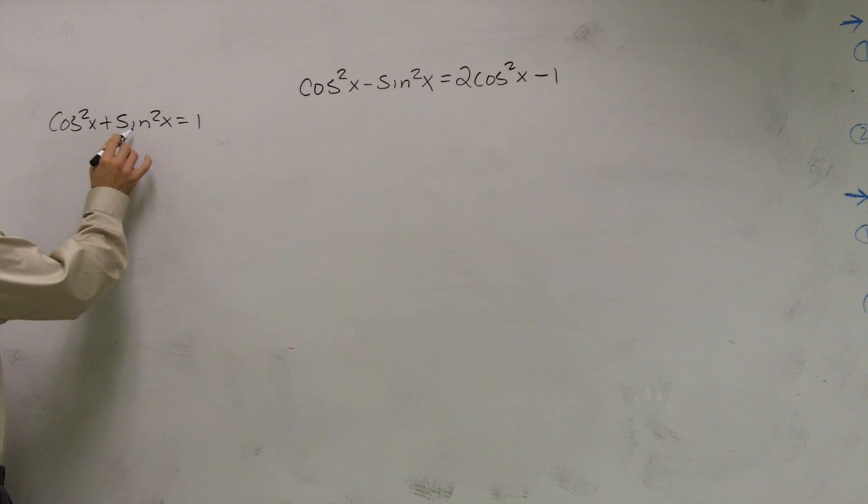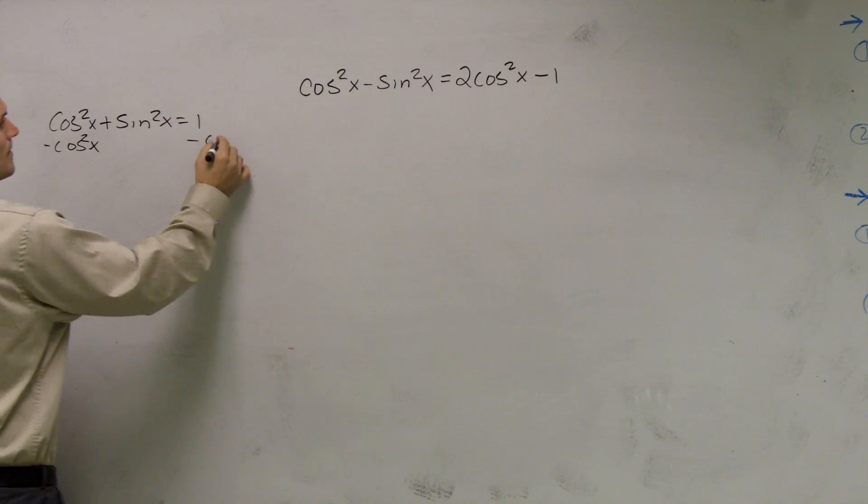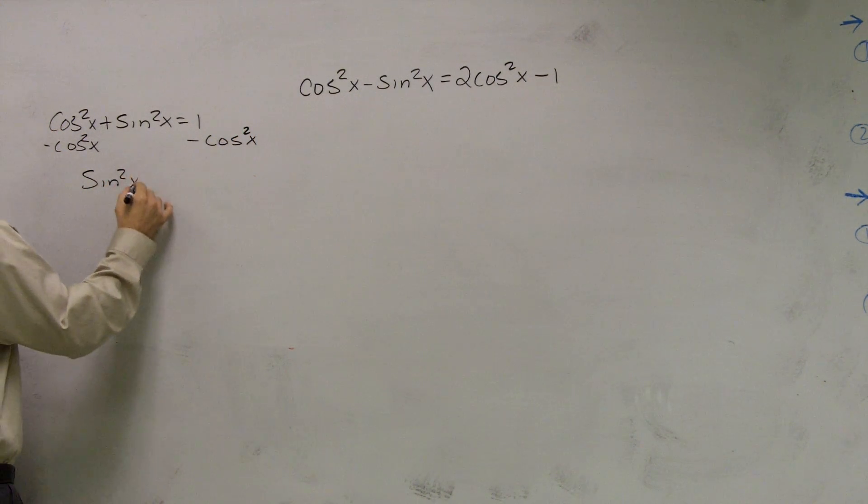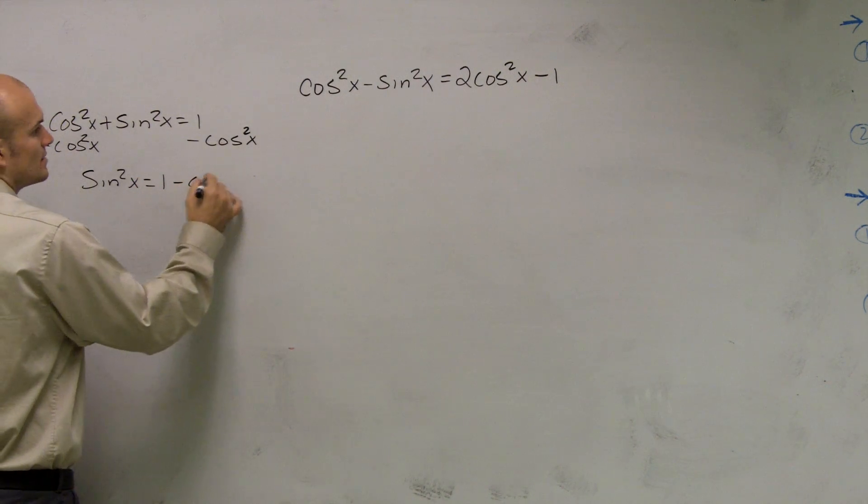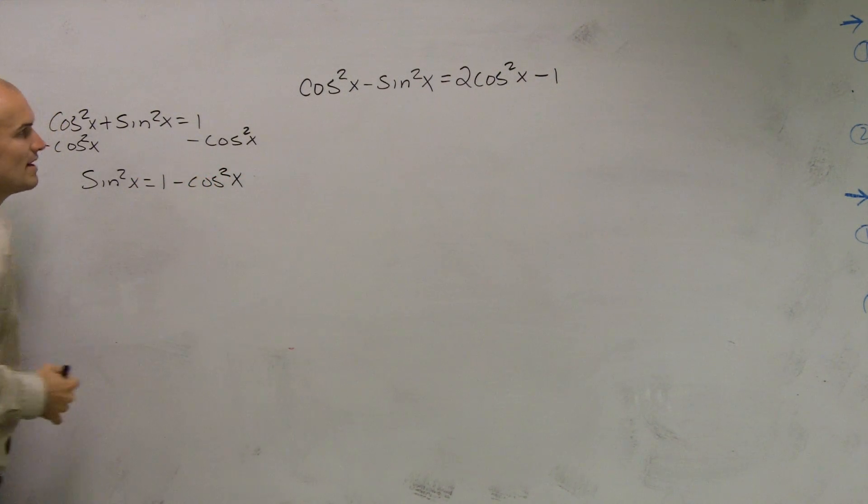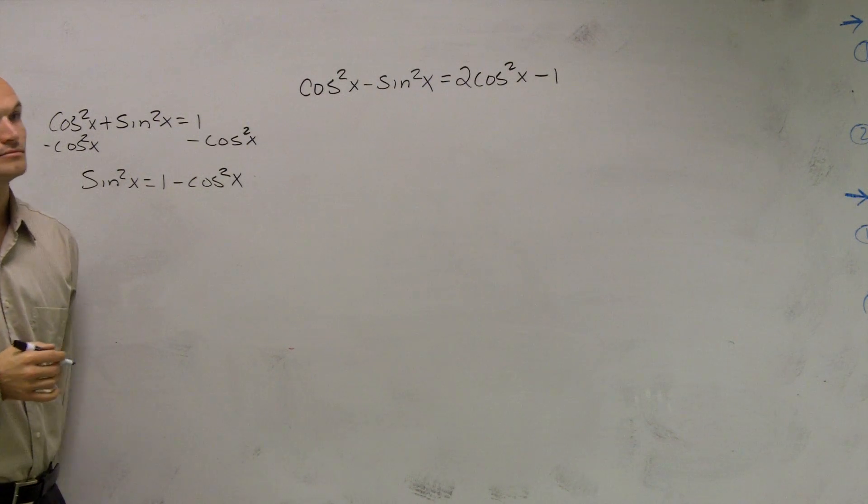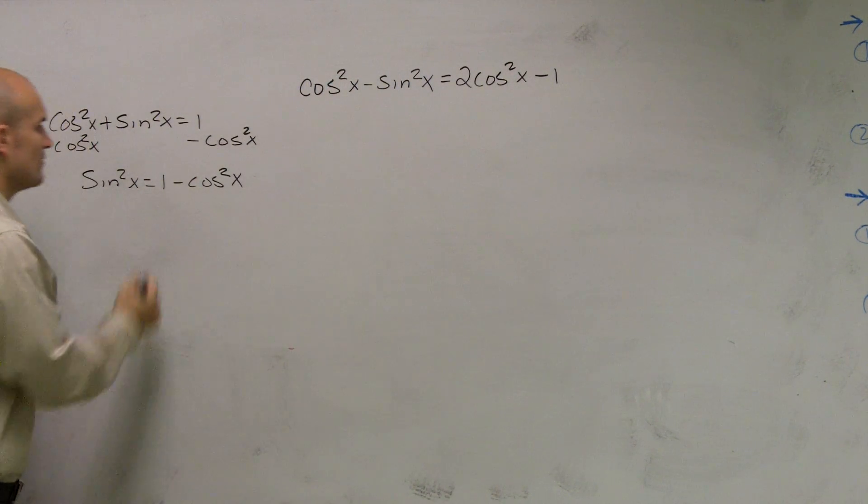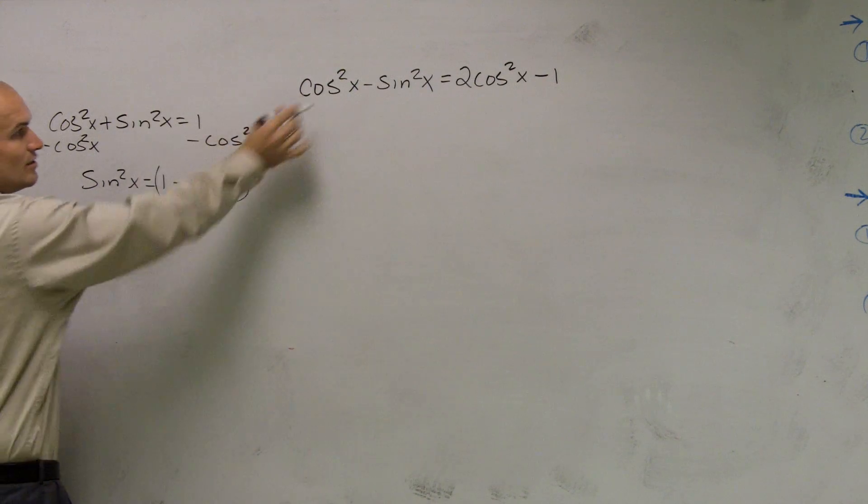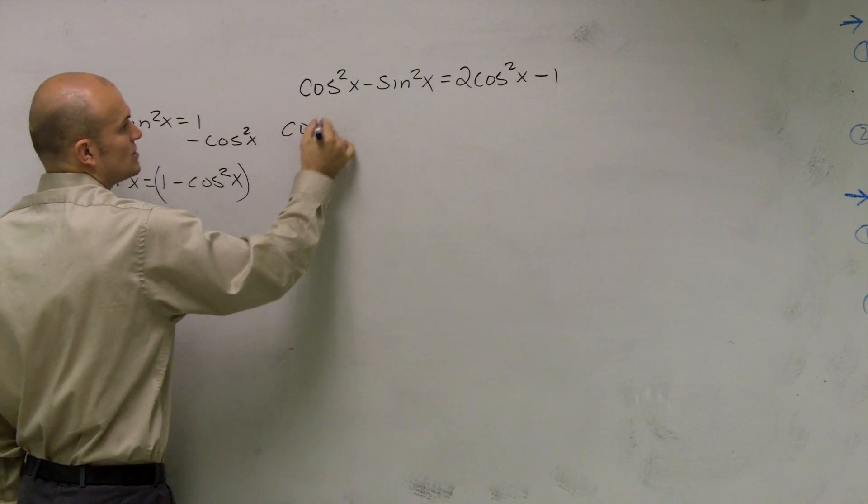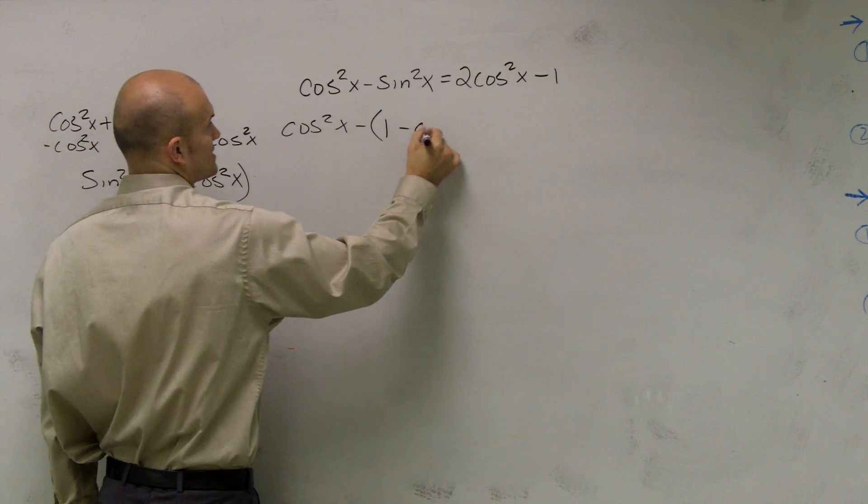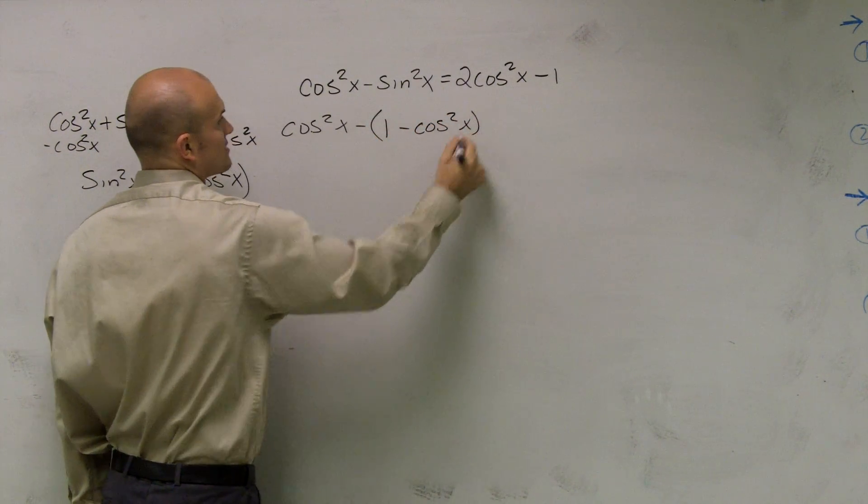So what I could do is I could say, well, what does sine equal? Well, by solving for sine, I could say sine squared of x equals 1 minus cosine squared of x. So now, if I was going to evaluate and plug that in for sine squared, I'd get cosine squared of x minus 1 minus cosine squared of x.